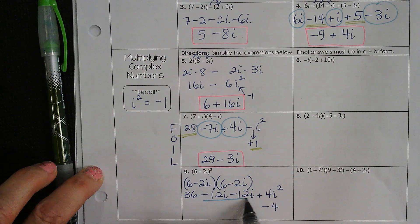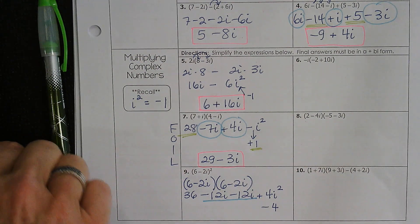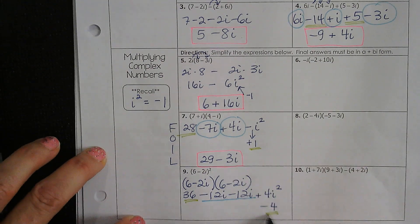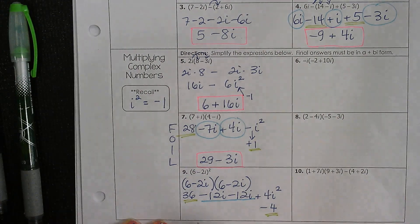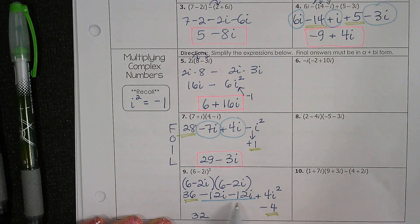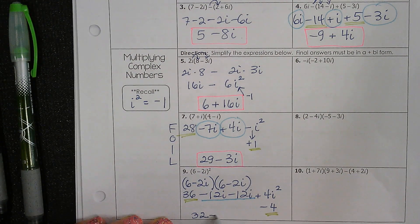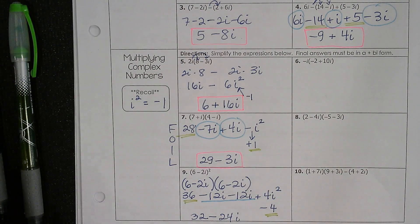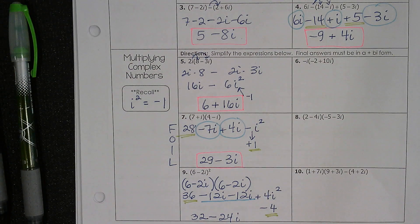And then we can combine like terms. So your i's are here. And your real numbers are here. So 36 minus 4 is 32. And then minus 12i and minus 12i is minus 24i. We've got three more to do.